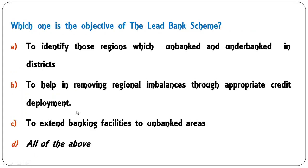What is the objective of the lead bank scheme? Options are: to identify unbanked and underbanked districts; to help remove regional imbalances through appropriate credit deployment; to extend banking facilities to unbanked areas; or all of the above. The correct answer is D — all of the above are objectives of the lead bank scheme.